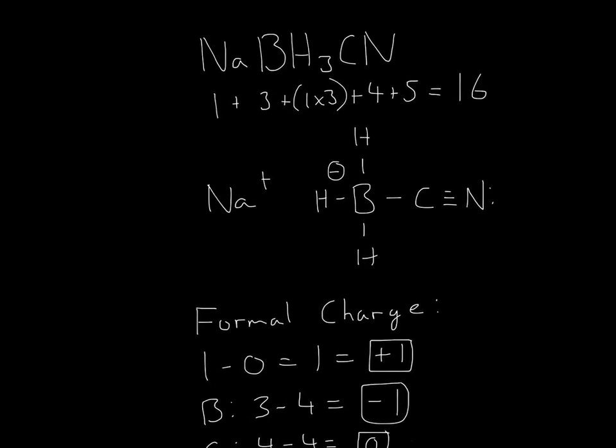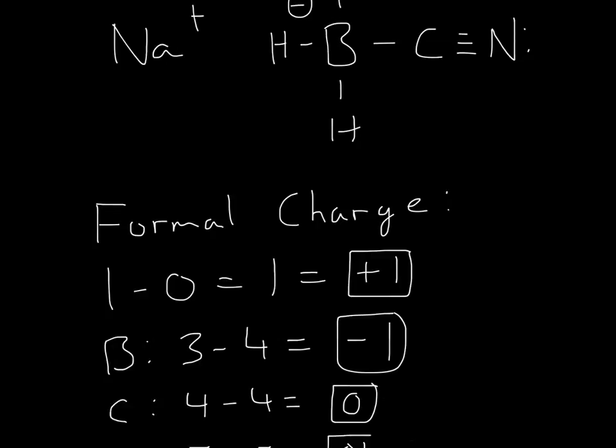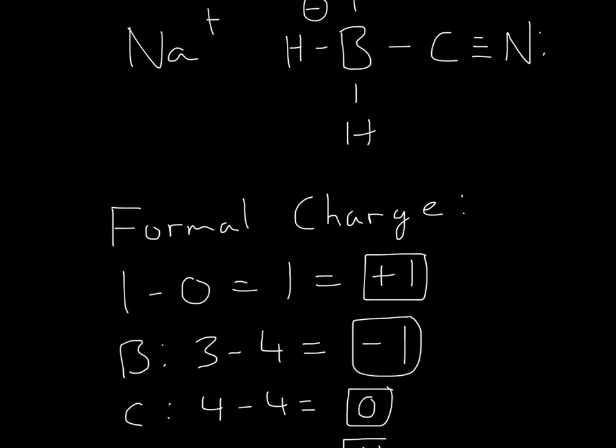Now, to go over formal charges for each one of these, so for Na, it's in group 1. So now we count how many bonds and lone pairs it has, and it actually has zero lone pairs or bonds, because it actually gave up its only valence electron. So it'll be 1 minus 0 equals 1. So that's why it has a plus charge.